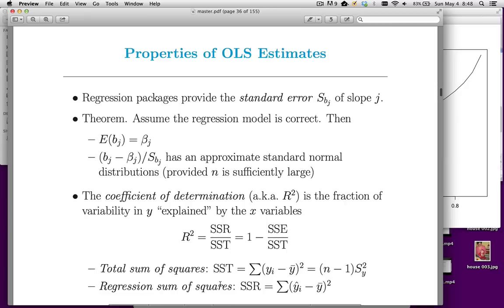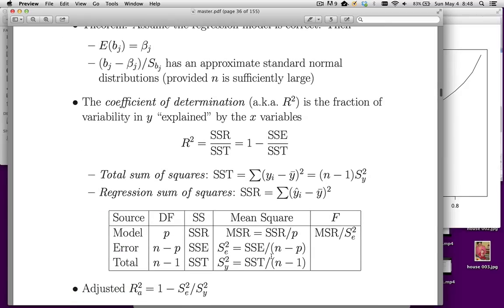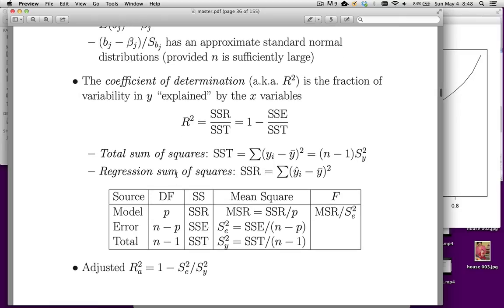Now, from there, we did all sorts of things with SSE. For example, we divided it by n minus p, which kind of makes like an average of it, and this gives us our mean squared error. Another thing that we did to it was divide by the total sums of squares, SST. And that gave us the fraction of variation unexplained by the model. You take one minus that, you get R squared.